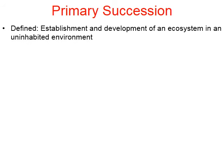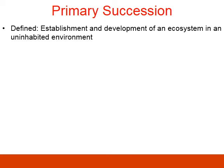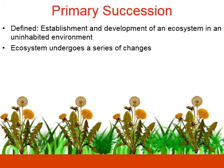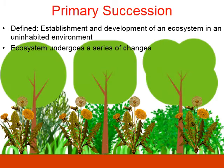So let's look at primary succession. The definition is pretty straightforward — it's the establishment and the development of an ecosystem in an uninhabited area. Here's an uninhabited area, and what happens is this ecosystem is going to go through a series of changes. Small life begins to grow and then a little bigger and then a little bigger. How does this gradual series of changes occur? That's what this video is going to discuss.